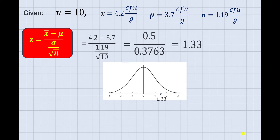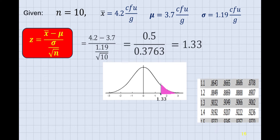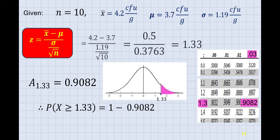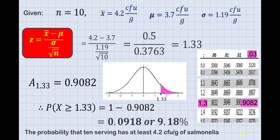To illustrate, we have 1.33 on the normal curve, and we're going to find the area greater than 1.33. Finding the value of 1.33 in the z-table: 1.3 and 0.03, which is equal to 0.9082. So the area of 1.33 is 0.9082, and the probability of x greater than 1.33 is subtracting that from 1, which is equal to 0.0918 or 9.18%. Therefore, the probability that 10 servings has at least 4.2 colony-forming units per gram of salmonella is 9.18%.